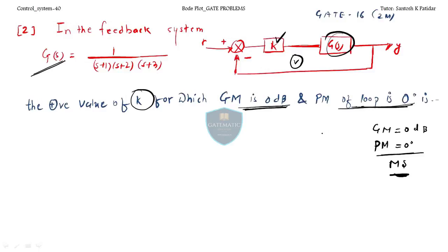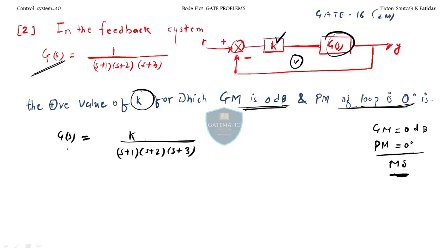The condition that gain margin is 0 dB and phase margin is 0 degrees always corresponds to a marginally stable system — we saw this in the last lecture. If you are seriously preparing for the GATE examination, you should get this answer in 30 seconds. The open loop transfer function becomes K divided by (s+1)(s+2)(s+3).